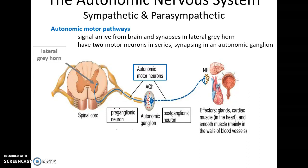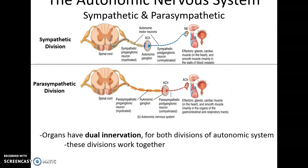The autonomic motor pathway always consists of two motor neurons in series. The first neuron originates in the lateral gray horn and sends its axon into the peripheral nervous system, entering an autonomic ganglion where it synapses with the postganglionic neuron, which then carries the signal to the target effector. This means all visceral structures have dual innervation - one signal from the sympathetic division and one from the parasympathetic division - with both having two motor neurons synapsing in a ganglion before reaching the target.